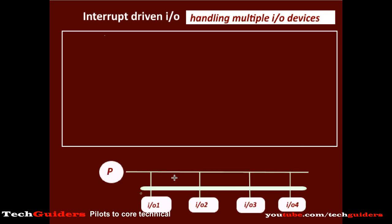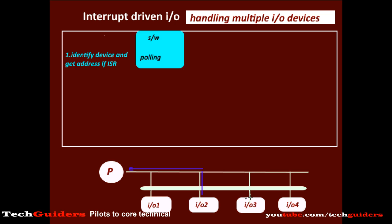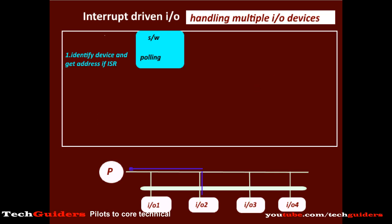If there are multiple I/O devices and any device raises an interrupt, the processor should recognize which device raised the interrupt so it can identify the address of the appropriate interrupt service routine to be executed. For this, a software-based approach such as polling can be used, in which the interrupt from any device is directed to a common routine that compares the status registers of all devices in a particular order. The device encountered first with its status bit set will be serviced. But the software-based approach is slow and less efficient, so we should rely more on hardware.